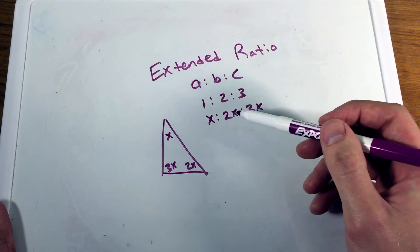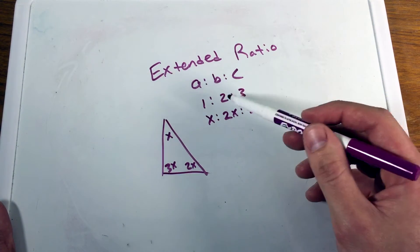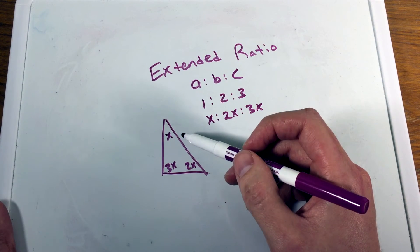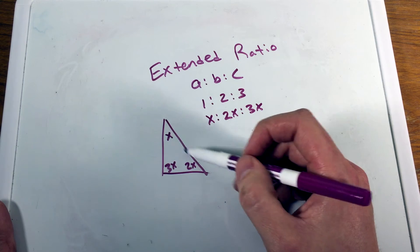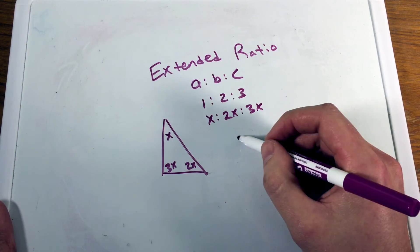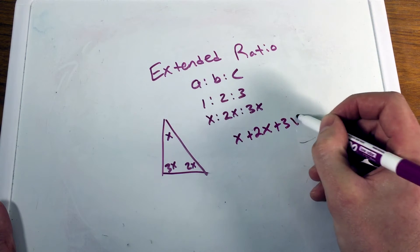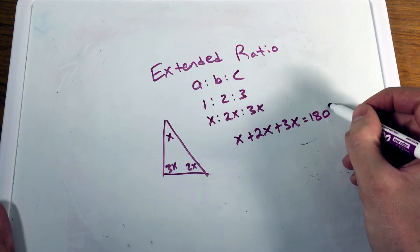I can solve what triangle has the interior angles ratio of one to two to three. We know by the triangle sum theorem that the interior angles of a triangle add up to 180, so X plus two X plus three X equals 180 degrees.